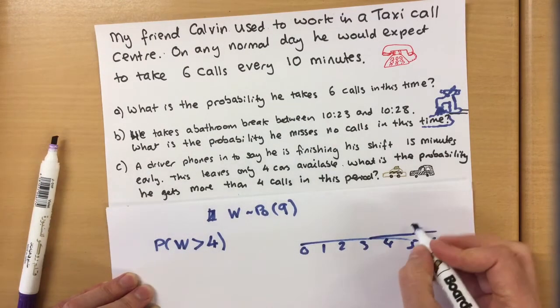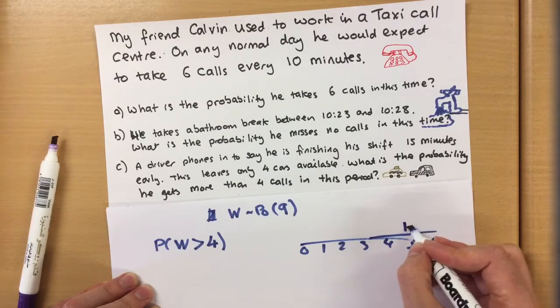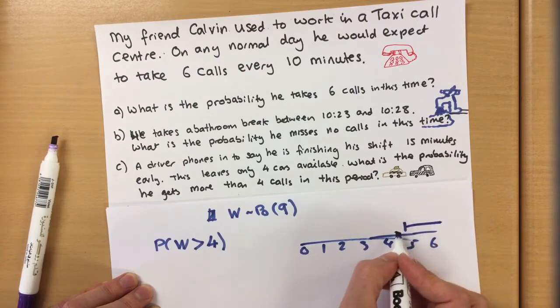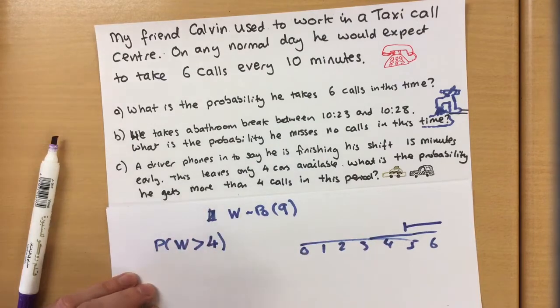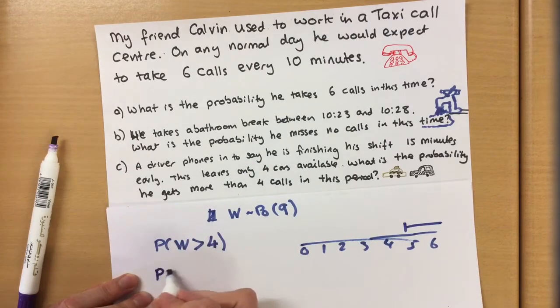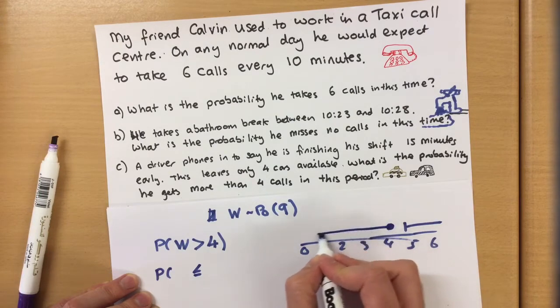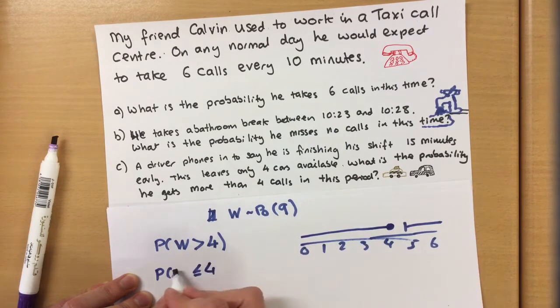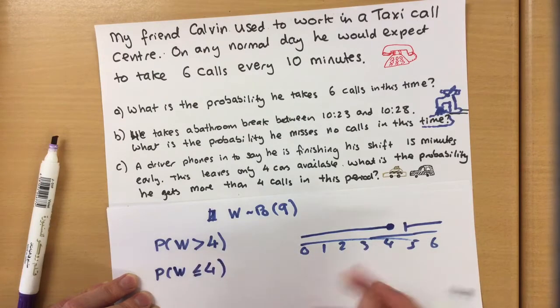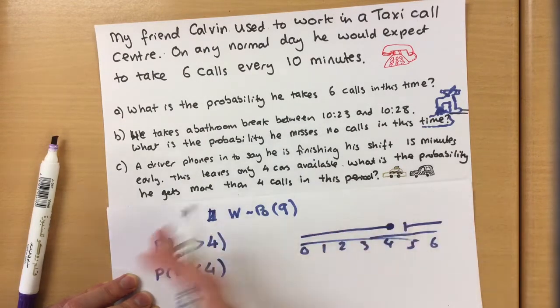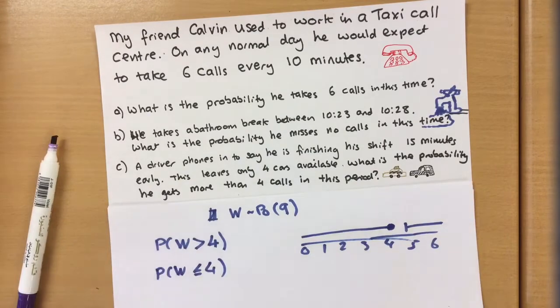So more than four, more than four means obviously five or bigger. Now our table only shows less than or equal to. So if we can find the probability of getting four or less, we're going to take that away from one and what's left is obviously the chance of getting more than four.